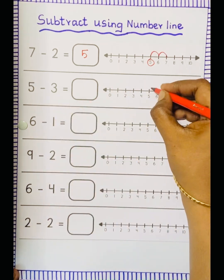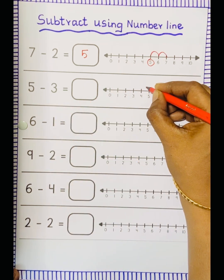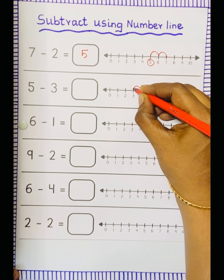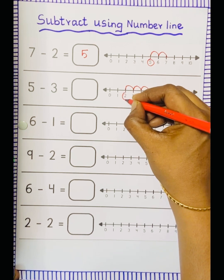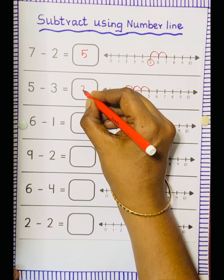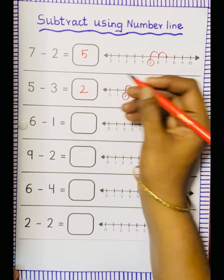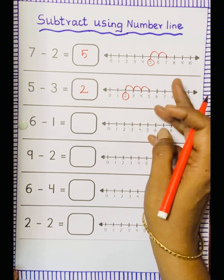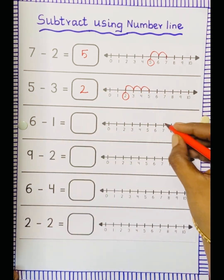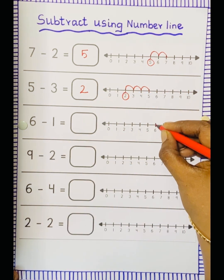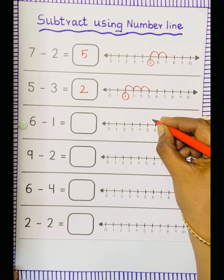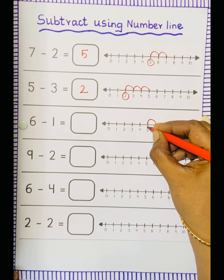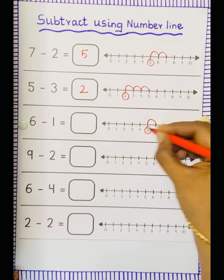5 minus 3. So keep the dot at 5, minus 3 means 3 jumps: 1, 2, 3. So the answer is 2. Next: 6 minus 1. Keep the dot at 6, minus 1 means 1 jump. So the answer is 5.